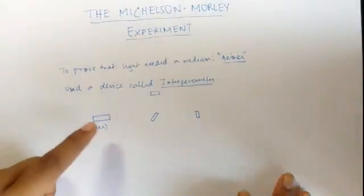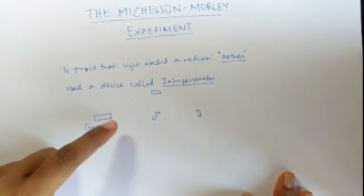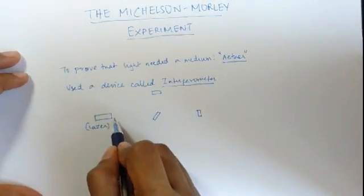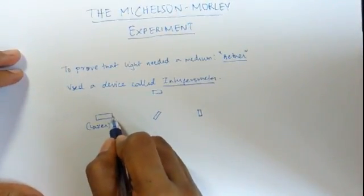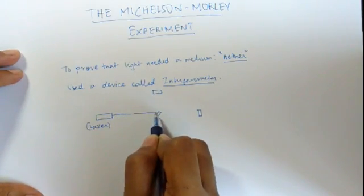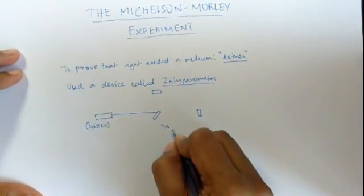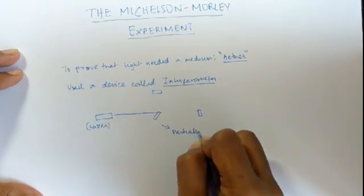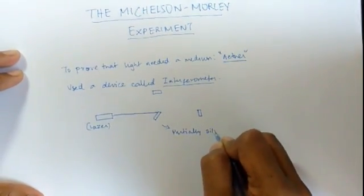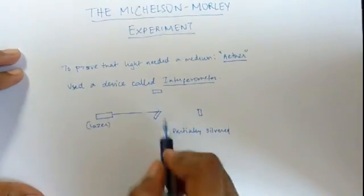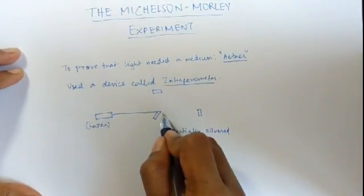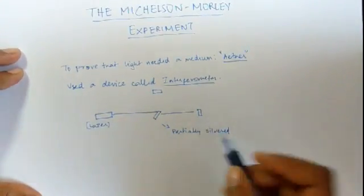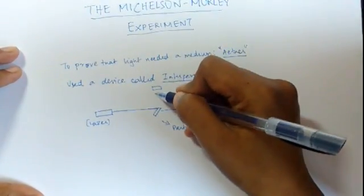What this device would do is that it would shoot a ray of light onto this partially silvered mirror. And since this is partially silvered, this would allow a set of rays to pass through and it would also reflect a set of rays.